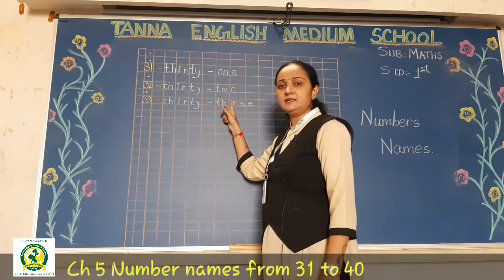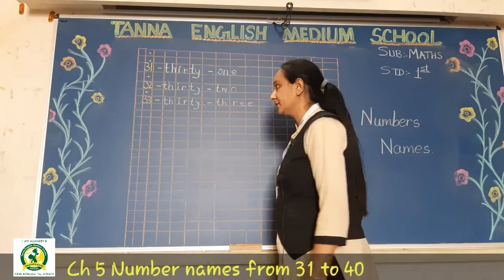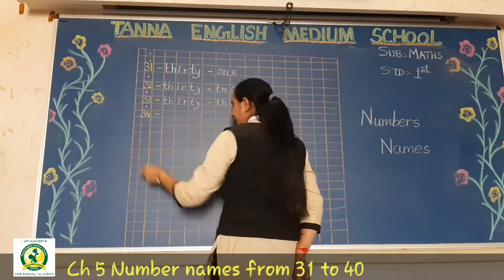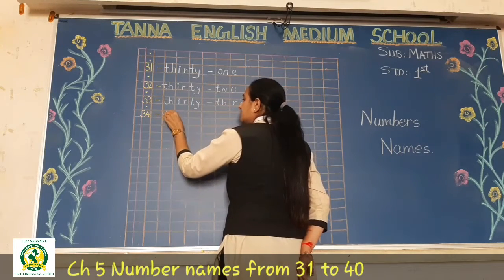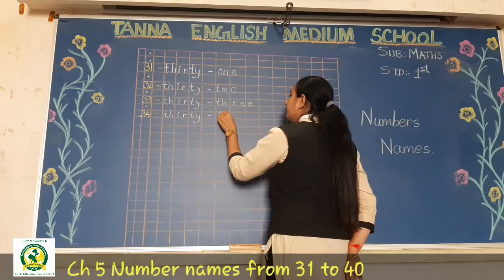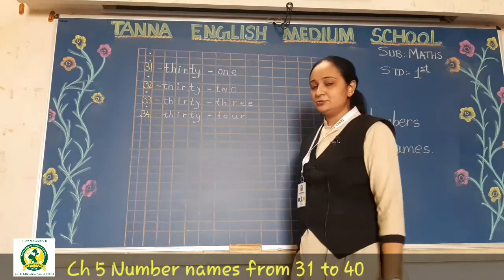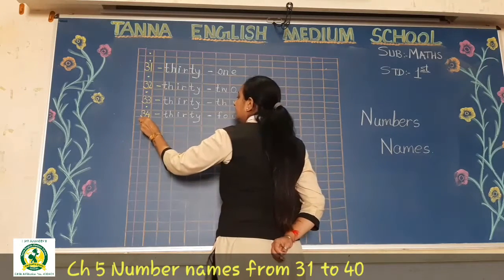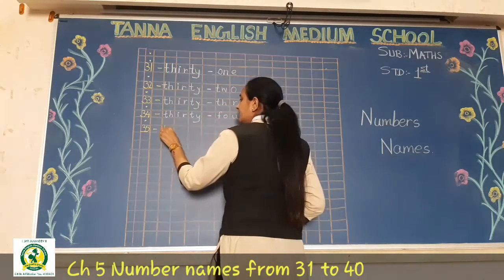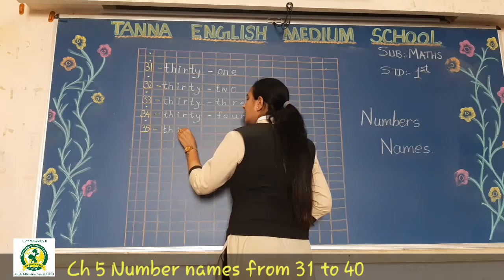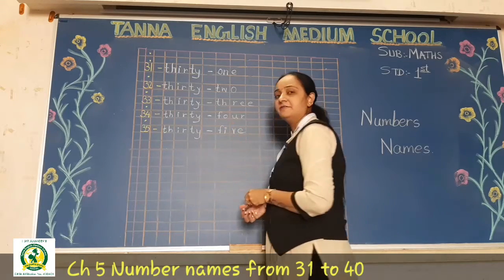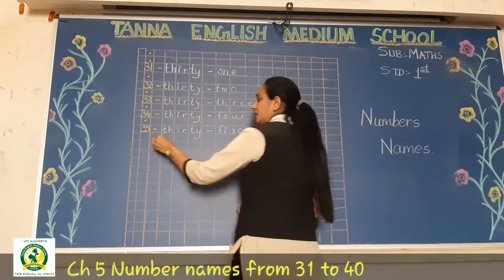After 33 comes 34 with a hyphen. Write T-H-I-R-T-Y for 30, then the spelling of 4: F-O-U-R. After 34 comes 35 with a hyphen. Write T-H-I-R-T-Y for 30, then the spelling of 5: F-I-V-E.